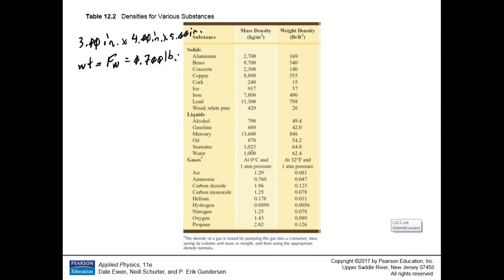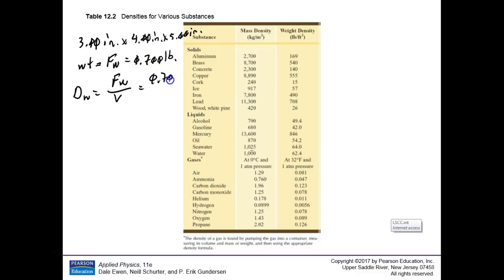What is its density? The definition for weight density is F sub w divided by the volume. The volume is length times width times height — multiply those three together and you get 60. The weight is 0.700 pounds divided by 60.0 cubic inches. But weight density is usually given in pounds per cubic foot, and we've got cubic inches here, so we have a problem.